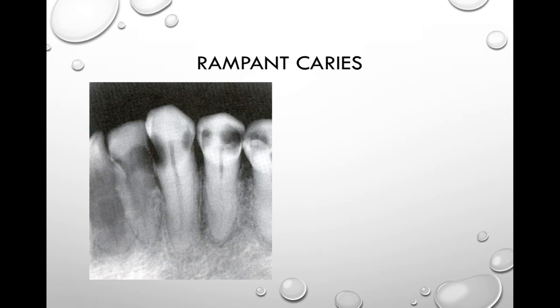We can also have rampant caries. Rampant caries refers to sudden, rapid, and uncontrollable destruction of the teeth. Most often this is observed with primary teeth of young children or permanent teeth of teenagers or adults with xerostomia. Advanced and severe caries affecting multiple teeth is what you see with rampant caries. In this radiograph, there is fairly advanced or severe decay on almost every tooth — that is rampant caries.